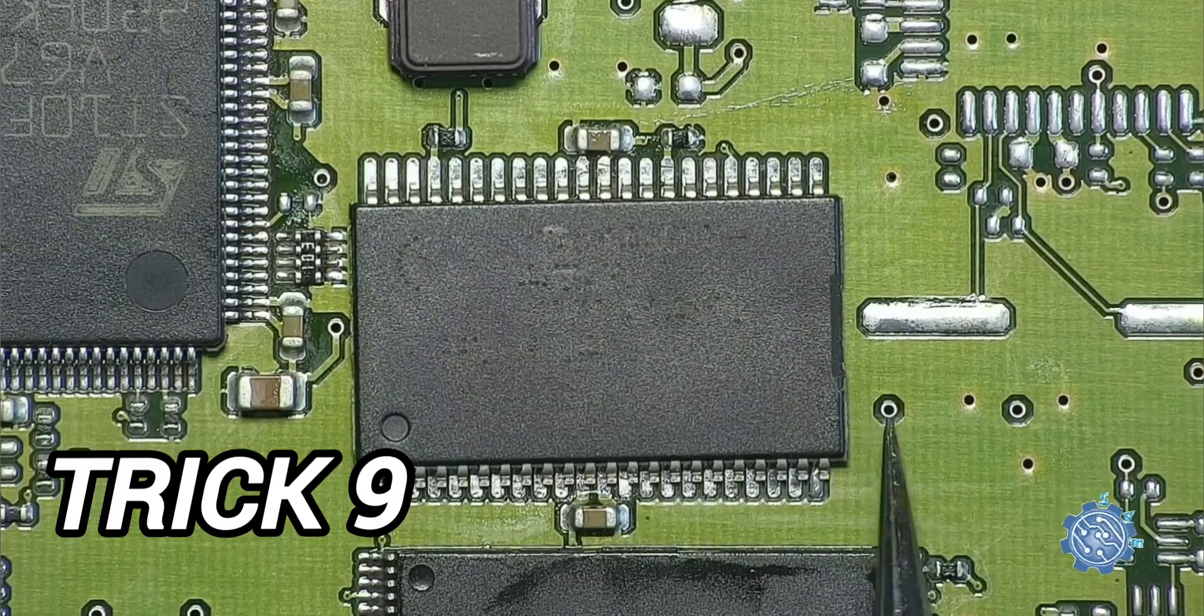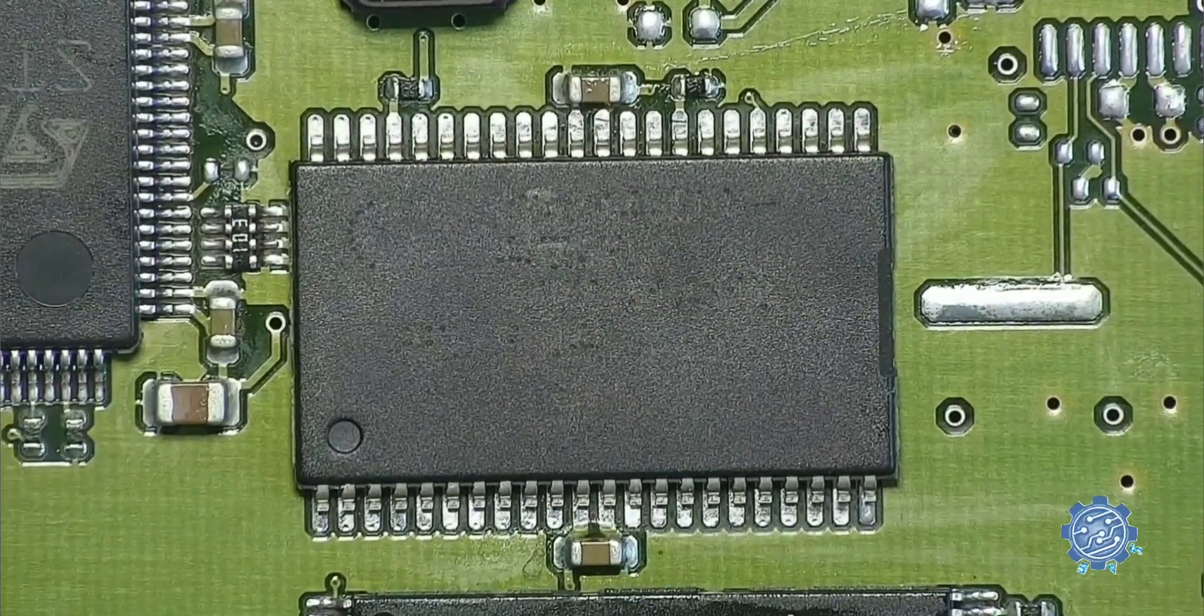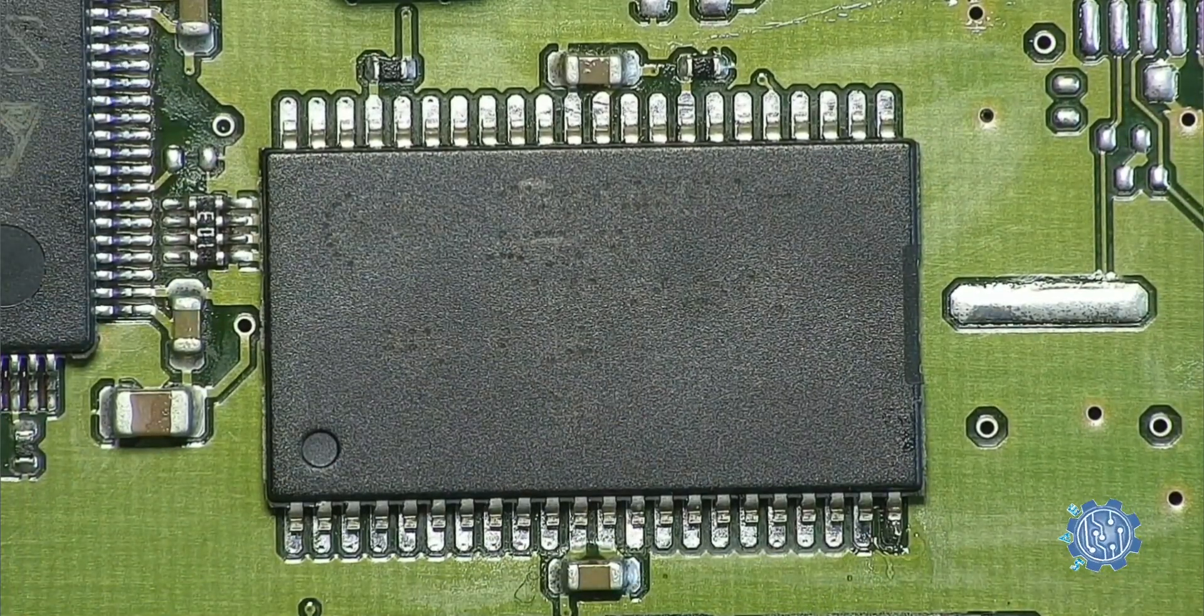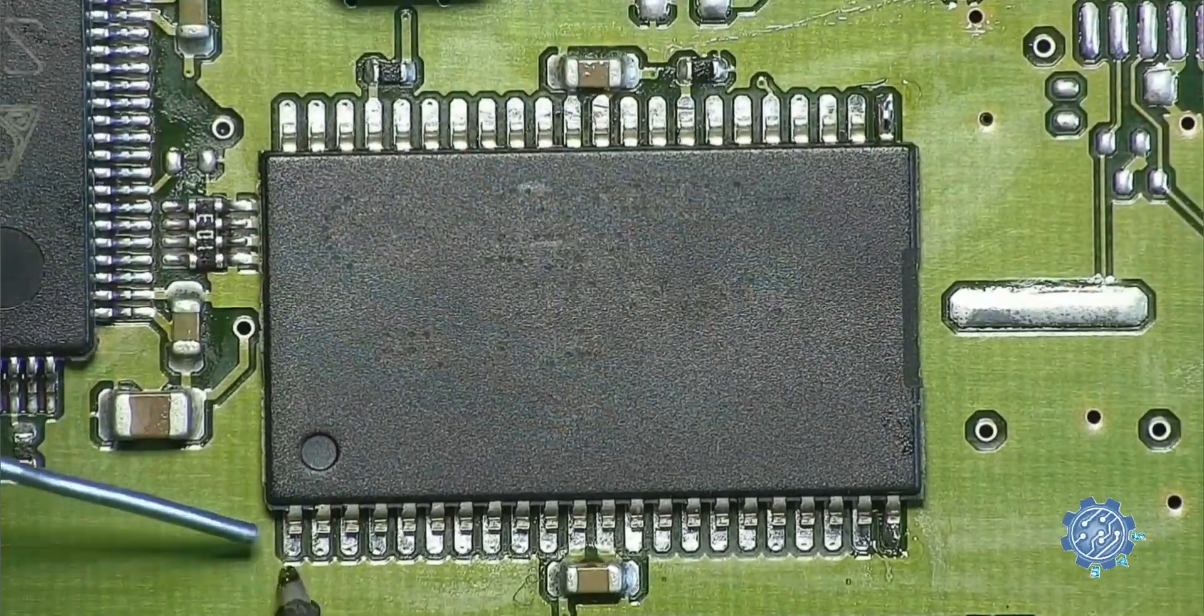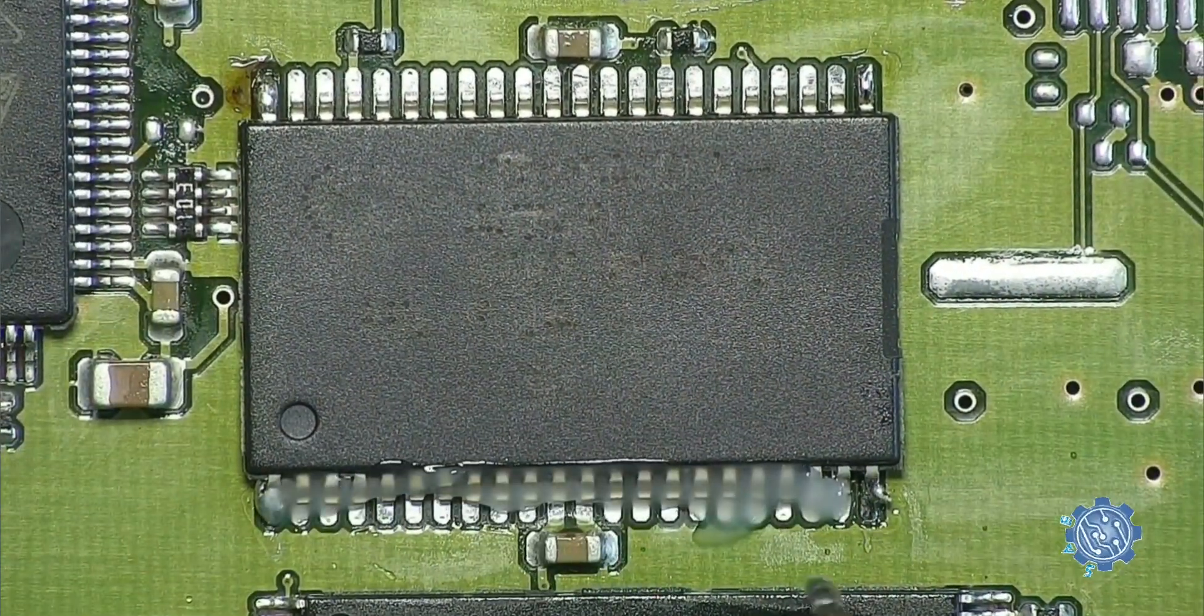Soldering an IC with many pins. Before soldering an IC with numerous pins, carefully choose a good position and start soldering the pins from the corner. Once the corner pins are secured, you can proceed to solder the remaining pins.